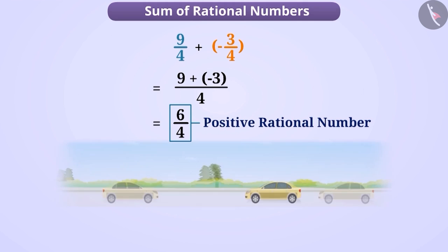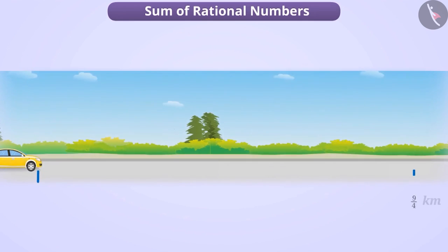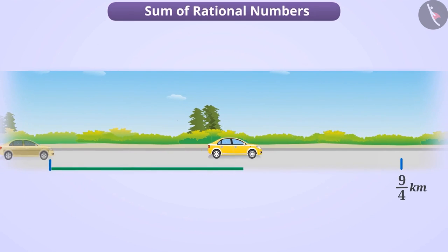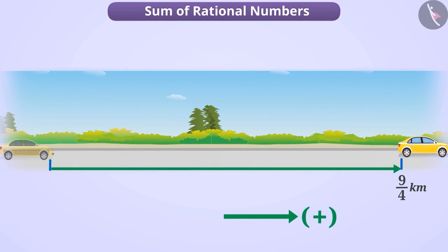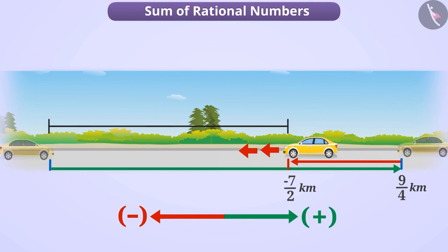Using this technique, we can say that the car is 6 by 4 km to the right from its starting point. Now, if the car travelled 9 by 4 km in the right direction and then 7 by 2 km in the left direction, how far would it have been from the starting point? Think about it!